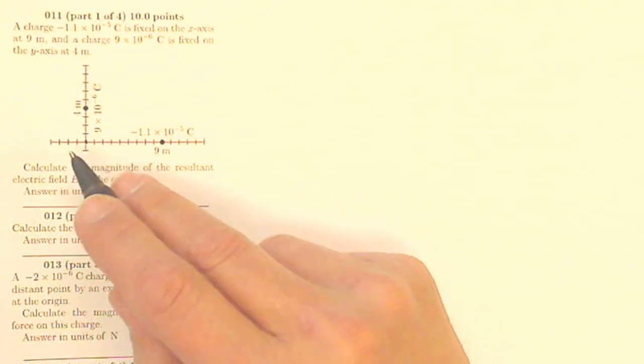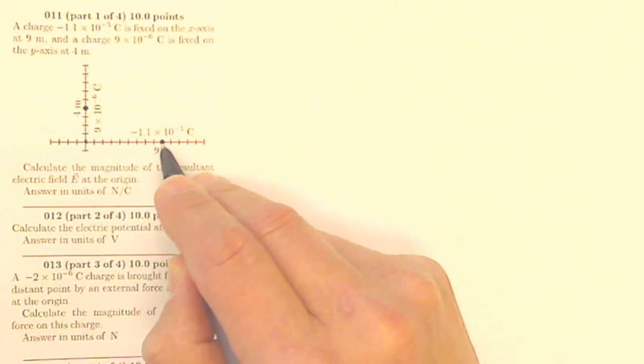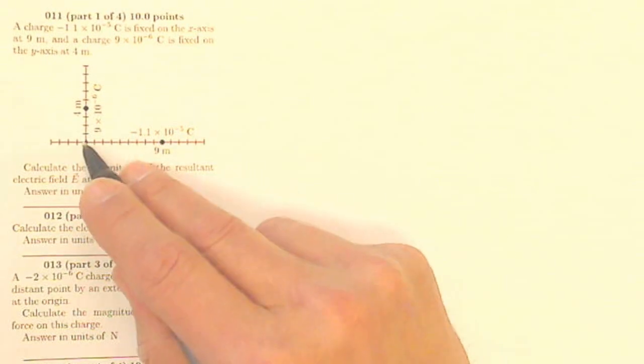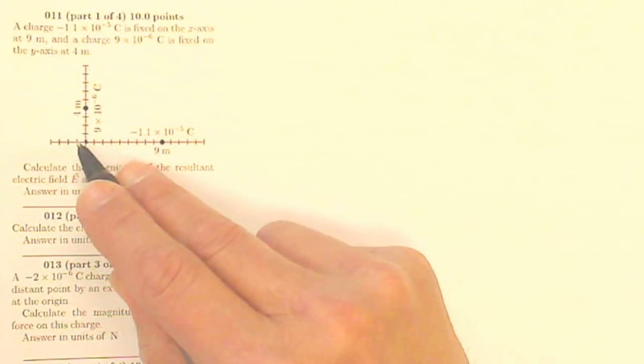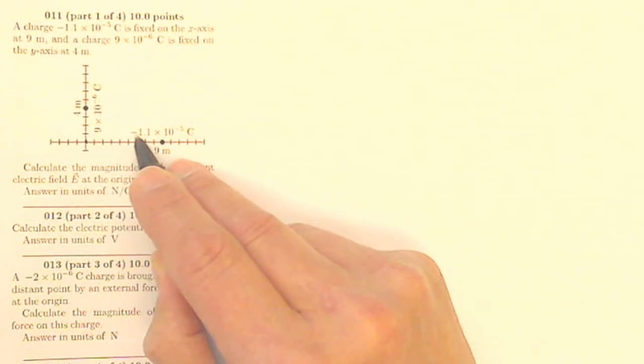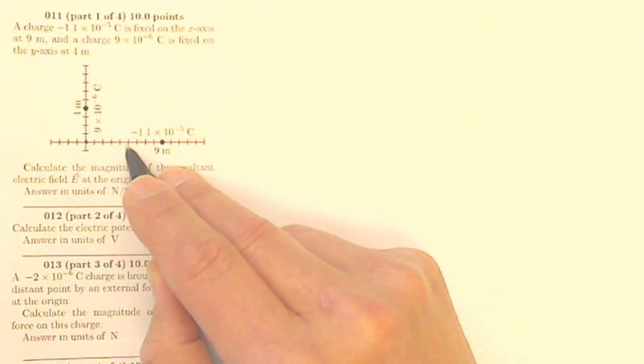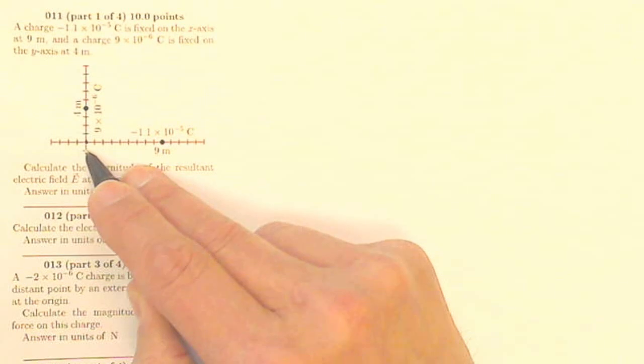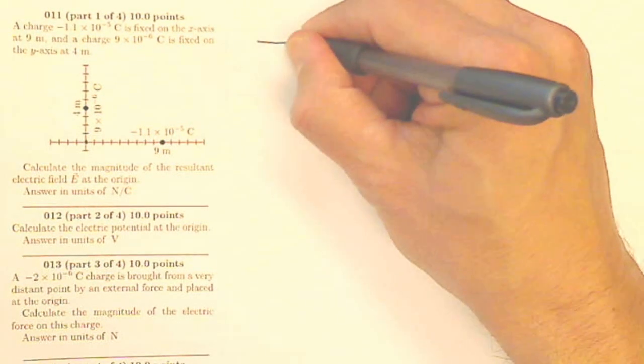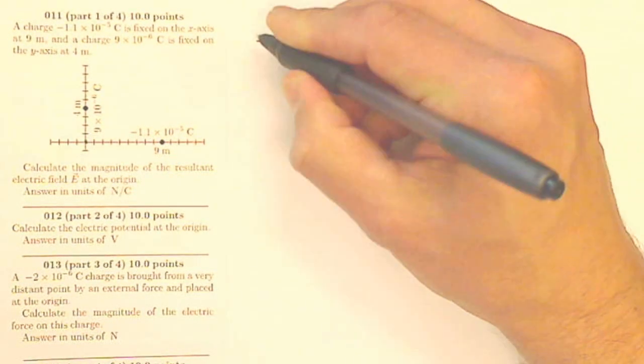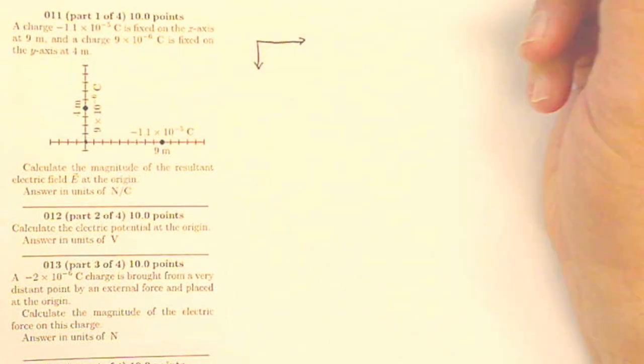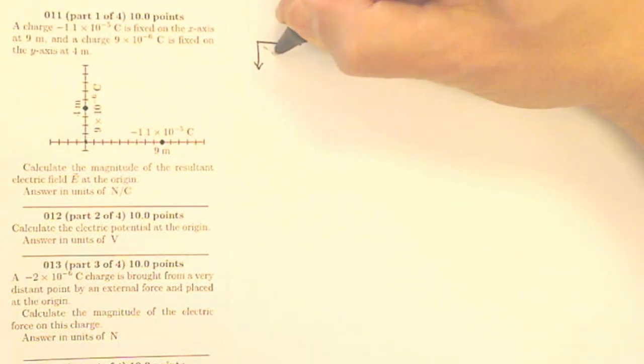Well, this is a vector question, so this one is going to be, since it's negative, it'll have an electric field pointed towards the right, because the electric field points the direction a positive charge would feel a force. This one is positive, so it's going to have an electric field pointed down. So if I were to draw those two, here is my electric field from the first one, here is my electric field from the second one, they are going to add to be a vector electric field down this way.